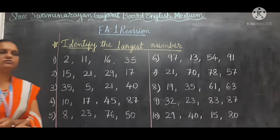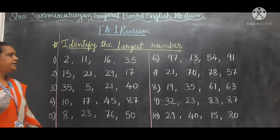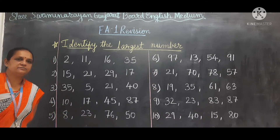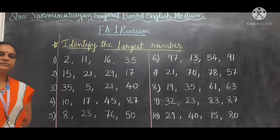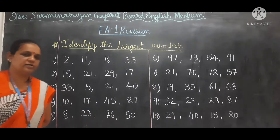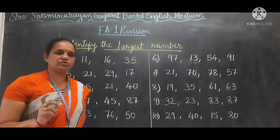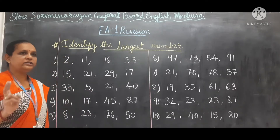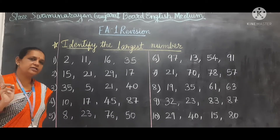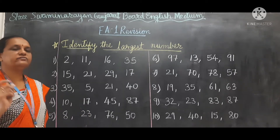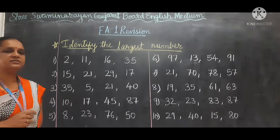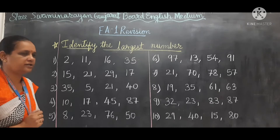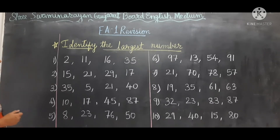Now in this you have to identify the largest number. Largest number means big number. Jo bada number hota hai us ko identify karo. Here in the exam you will get two options — in that, which is the largest number, on that option you have to click. Okay.